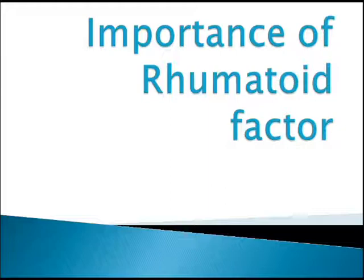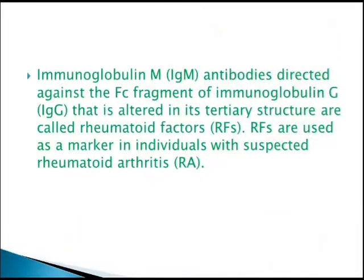Starting with rheumatoid factor: IgM antibodies directed against the Fc fragment of IgG that is altered in its tertiary structure are called rheumatoid factors. This is general background information, not the type of question they will directly ask.